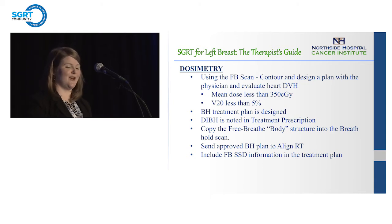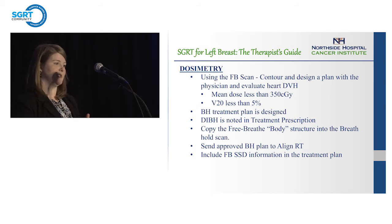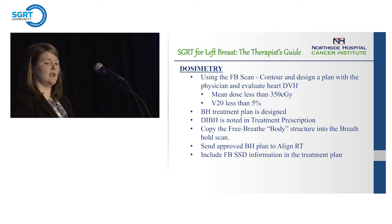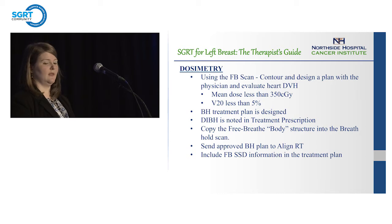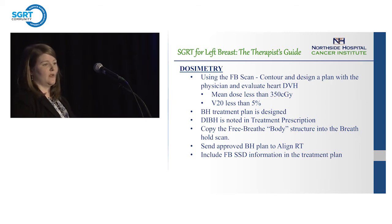I'm not a dosimetrist, so this is all from their information. We import both the free breathe scan and the breath hold scan. With four machines, we only have one with AlignRT right now, so we're trying to identify the patients who really need the breath hold. They contour and design a rough plan on the free breathe scan, and they're looking for a mean heart dose less than 350 with a V20 less than 5%. If breath hold is needed, they design a treatment plan. We copy the free breathe body into the breath hold scan so that we can import that structure as well.